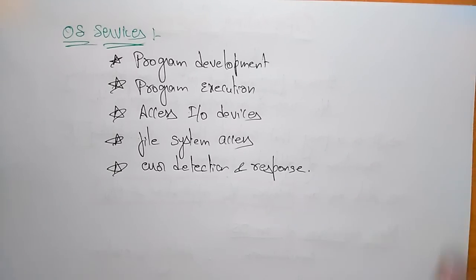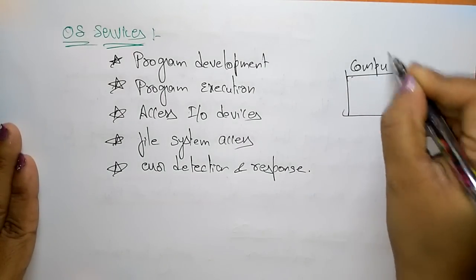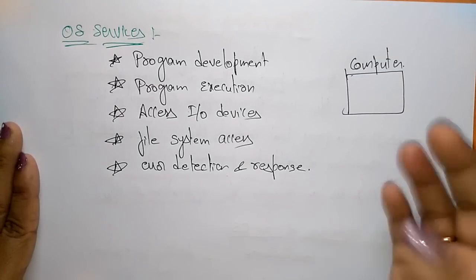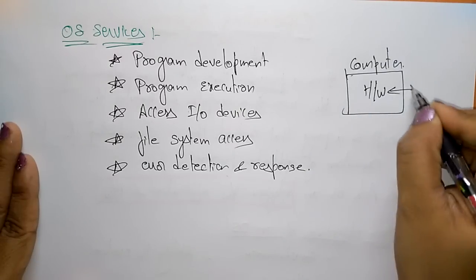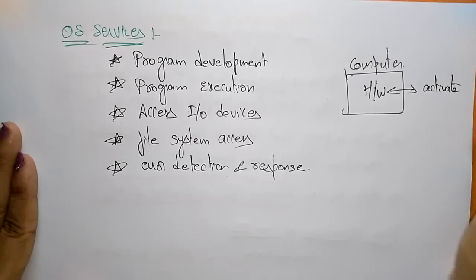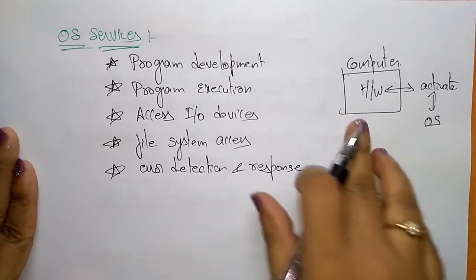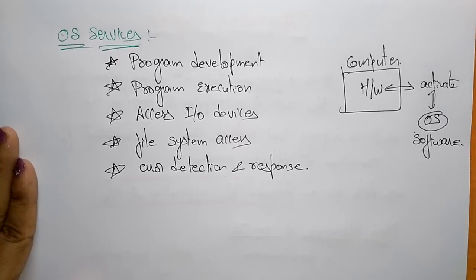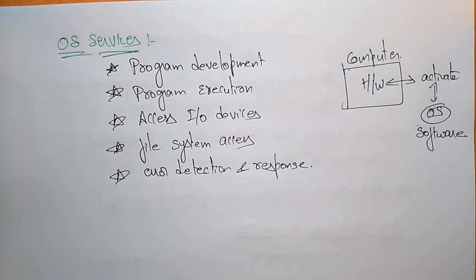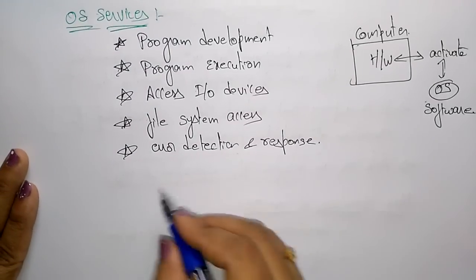You should think of the operating system as a software which enables the hardware. Whatever hardware components are present in a computer, mobile, or any gadget — to activate and run those hardware components, we need the operating system. The operating system is software, and it comes in different types: you can install Windows, Linux, Unix — different operating systems are present.